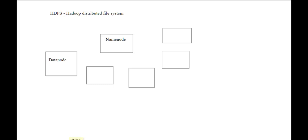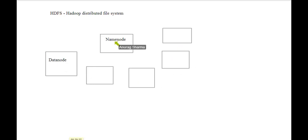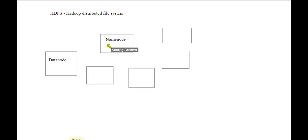When I say a node, I am pointing to a particular machine. Each machine is a node. So all these things are DataNodes because they are all slaves, and this guy is the master — he is called the NameNode. So from now on I won't be using the term master or slave; rather I would be using the term NameNode and DataNode.